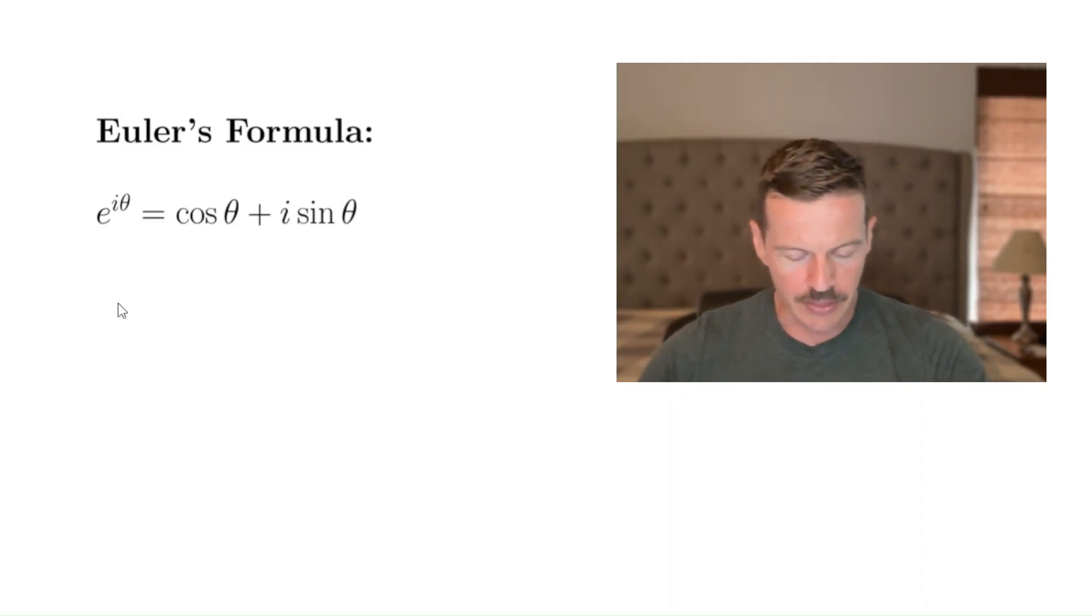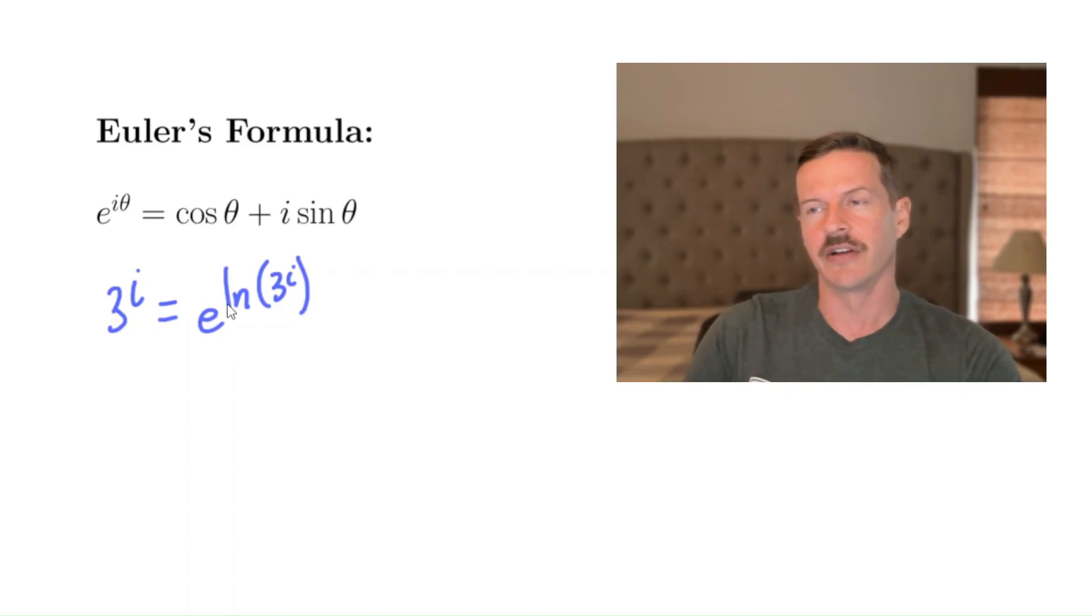Okay, so how do we do three to the i? Well, three to the i, we can write as e to the natural log of three to the i. Okay, now here this natural log is a complex logarithm.